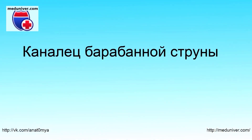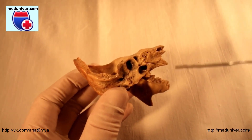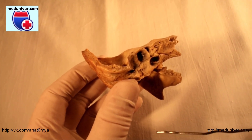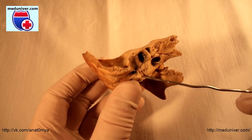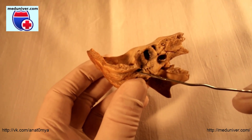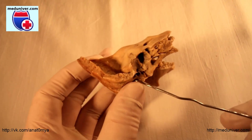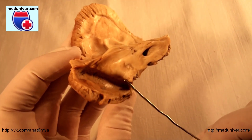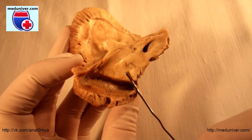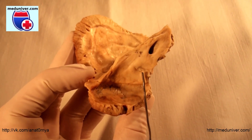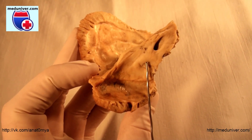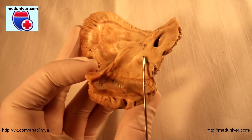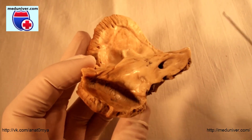Canaliculus of chorda tympani — Canaliculus chordae tympani. Chorda tympani is a branch of the facial nerve, and begins in the third part of the facial canal, then goes up and forward, and ends in the petrotympanic fissure. In this canal transmits the branch of the facial nerve, chorda tympani.